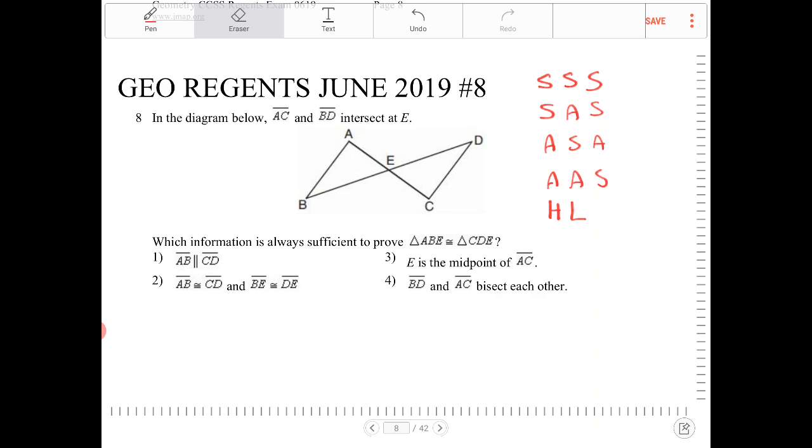Let's take a look at option two. AB is congruent to CD. And BE is congruent to DE. This would not be good. Because we have two pairs of sides congruent. That's great. However, we don't have any angles at the moment.